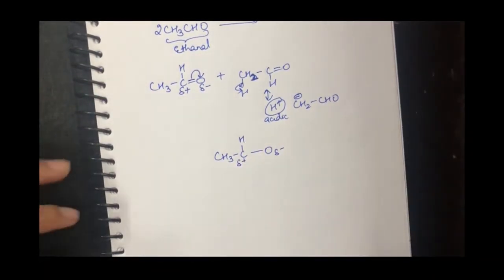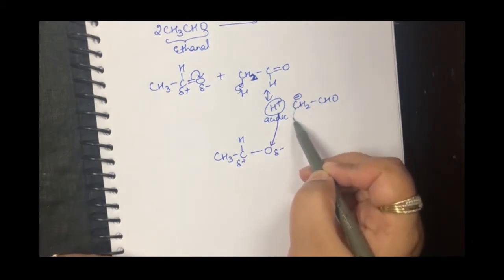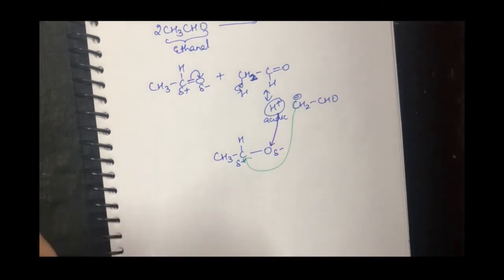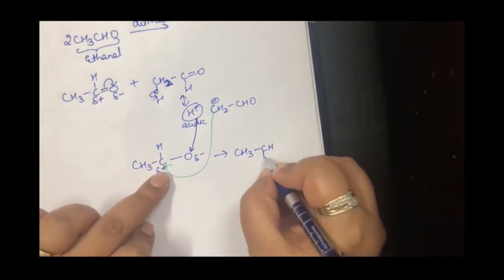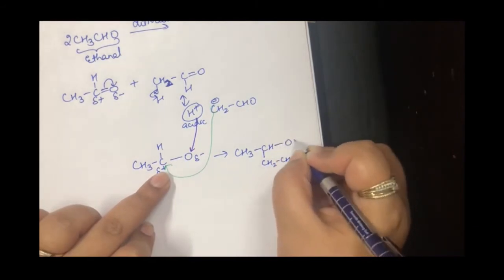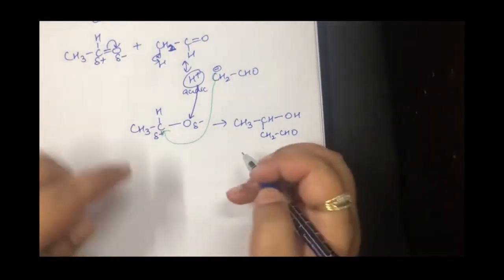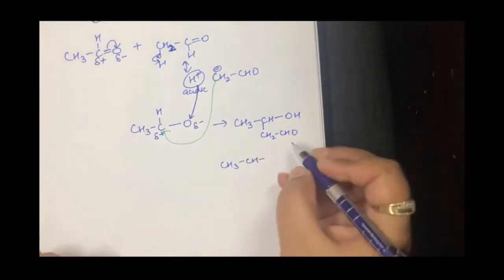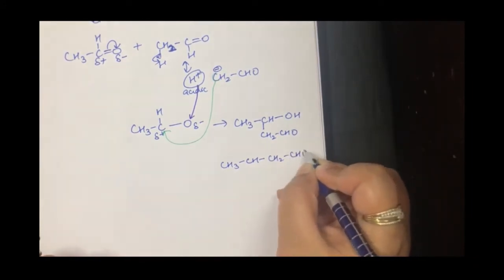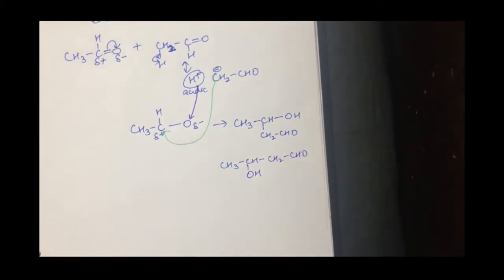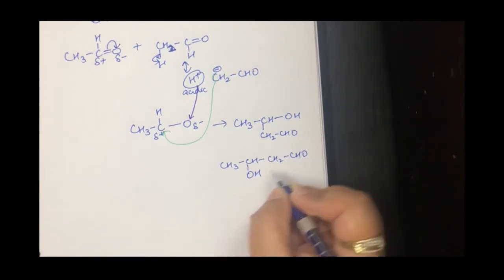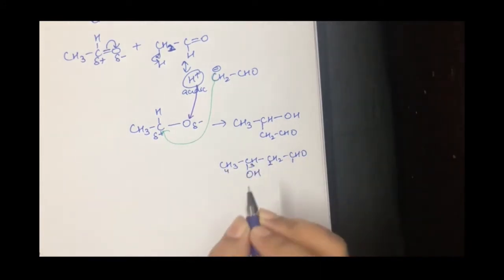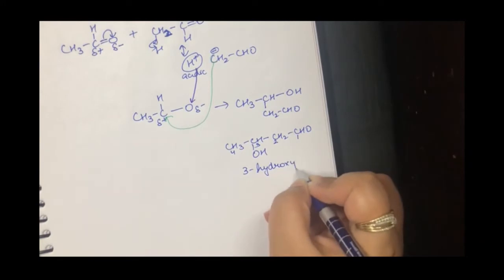The delta positive carbon is attacked by the negative carbanion. So the negative carbon attaches to the positive carbonyl carbon. The product formed is CH₃CH(OH)CH₂CHO. I rearrange it for better understanding — the parent group is the aldehyde, so numbering starts from there — and this compound is called 3-hydroxybutanal. This molecule has both an alcohol (ol) and an aldehyde (ald) group, so it is called an aldol.